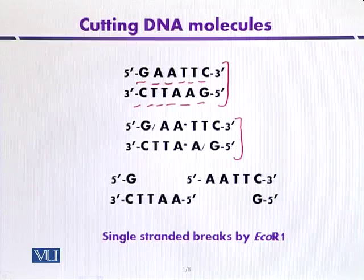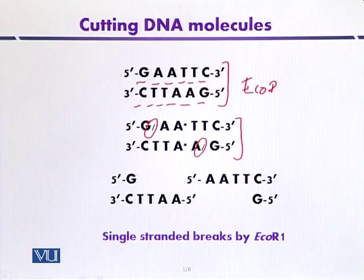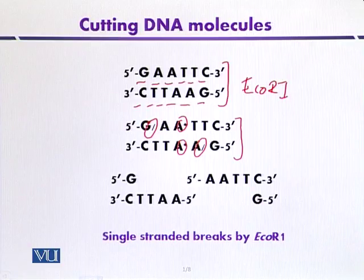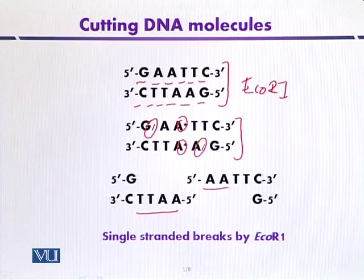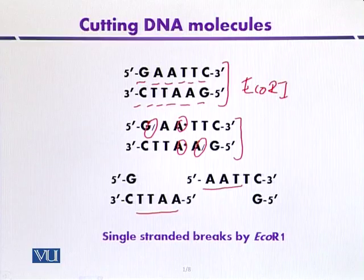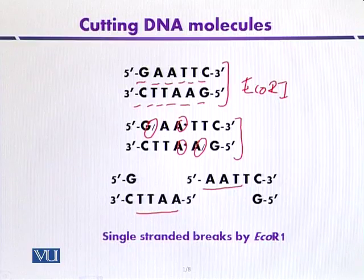The cutting site is indicated by a forward slash — these are the sites where EcoR1 restriction enzyme cuts the DNA. The asterisks indicate positions where adenine can be methylated by the separate methylase activity of EcoR1. When EcoR1 cuts the DNA, it produces single-stranded overhangs — single strands protruding at 5' ends. This is the generation of cohesive ends. These cohesive single-stranded ends, when they come in contact with another DNA source, can base pair, and after annealing, the gaps can be sealed by DNA ligase.